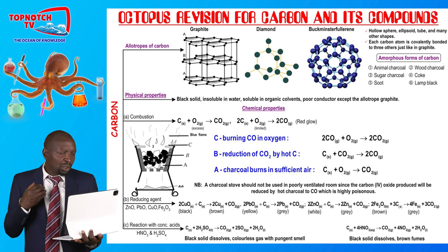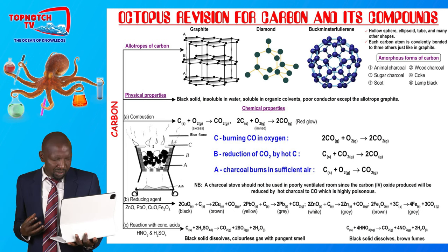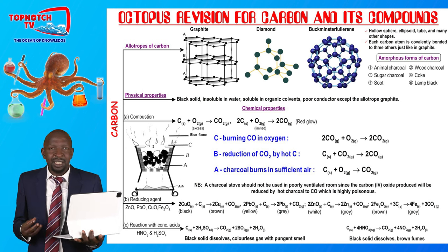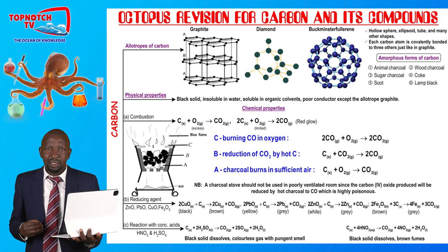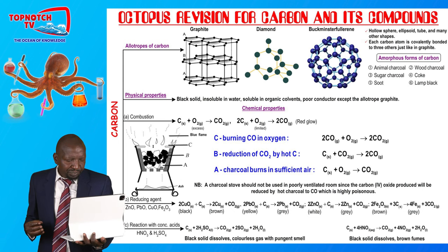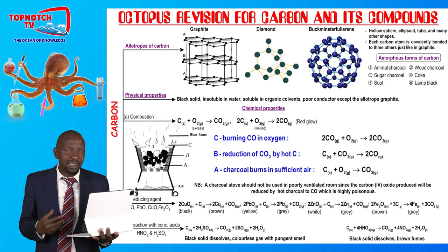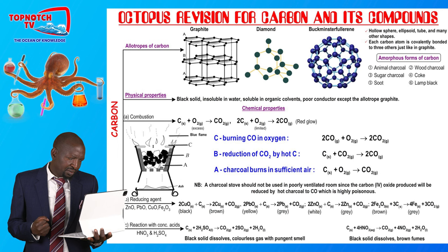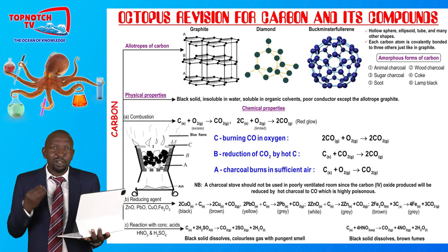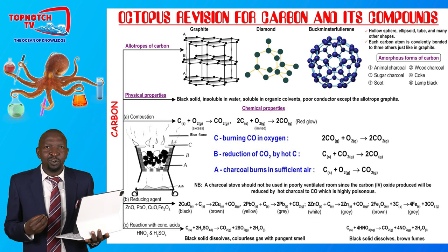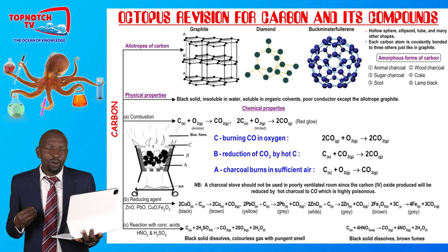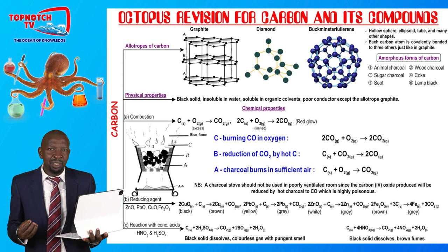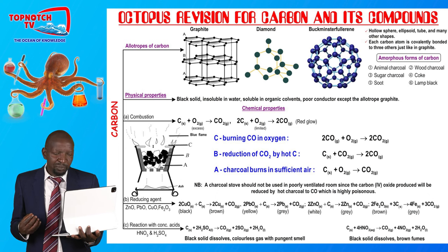Now we look at the physical and chemical properties of carbon. Carbon is a black solid; it is insoluble in water but soluble in organic solvents. It is a poor conductor of electricity, except for the graphite allotrope. Chemically, carbon burns in a limited supply of air to form carbon monoxide (CO), and burns in excess air to form carbon dioxide (CO₂). The observation when you burn carbon is that it burns with a red glow.